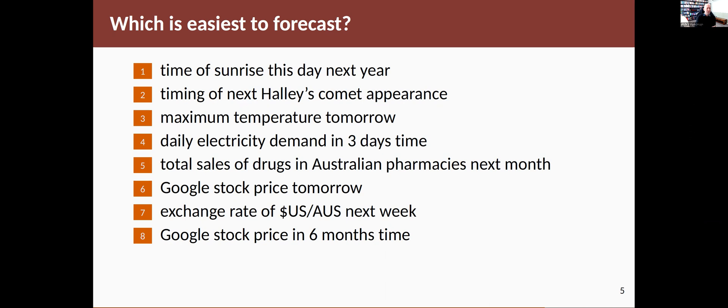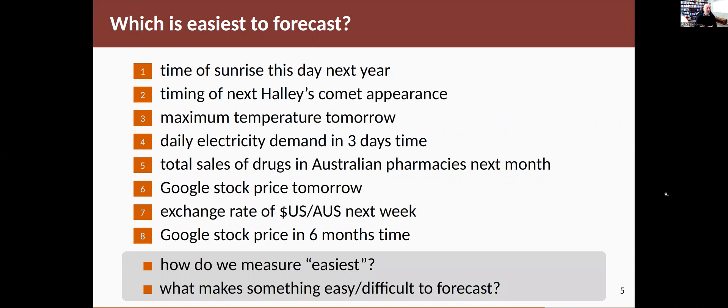Then we have sales of drugs. That's a little bit more difficult, a little bit more variable. And then at the bottom of the list I have the three finance ones, which are quite tricky. Forecasting the Google stock price tomorrow is easier than forecasting an exchange rate in a week's time, which is easier than forecasting a stock price in six months time. The reason these are ordered this way is simply because of the time horizon. The sooner it is, the closer it is, the easier it is to forecast. In doing that exercise, we have to think about how do you measure easiest and what is it that makes something easy or difficult to forecast.